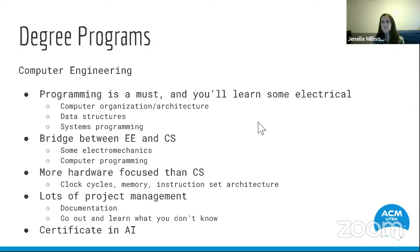First, the computer engineering degree program, which is in the College of Engineering. This degree program is one where you will definitely learn how to program, but you'll also learn about different electrical devices. You'll take courses very similar to computer science, like computer organization, computer architecture, data structures — a really foundational class for any programming — as well as systems programming. Computer engineering is a bridge between electrical engineering and computer science: you get electromechanics knowledge from EE, plus computer programming skills from CS. How it differs from CS is it's more hardware focused.